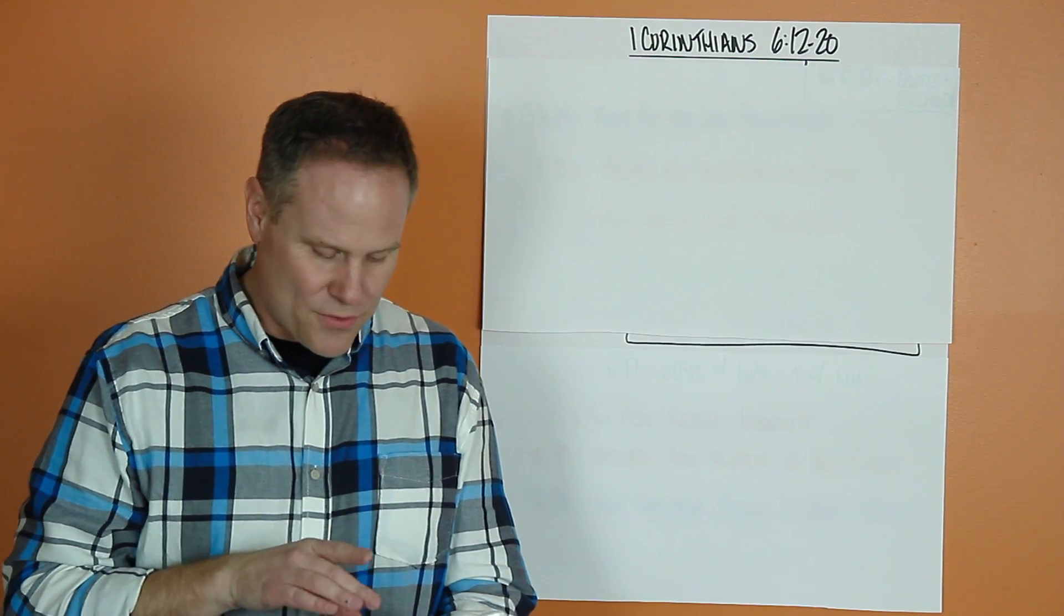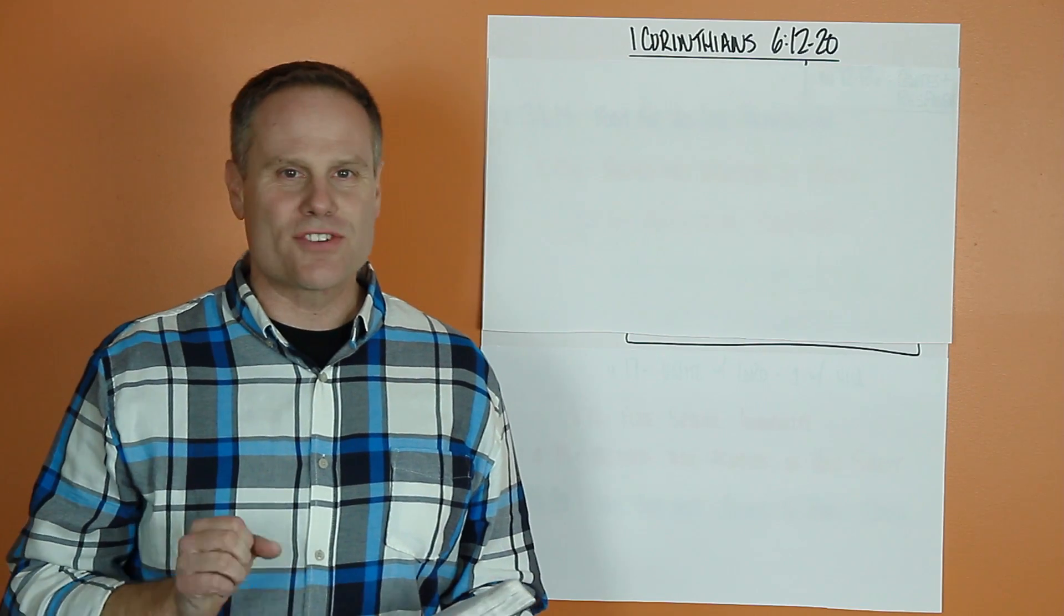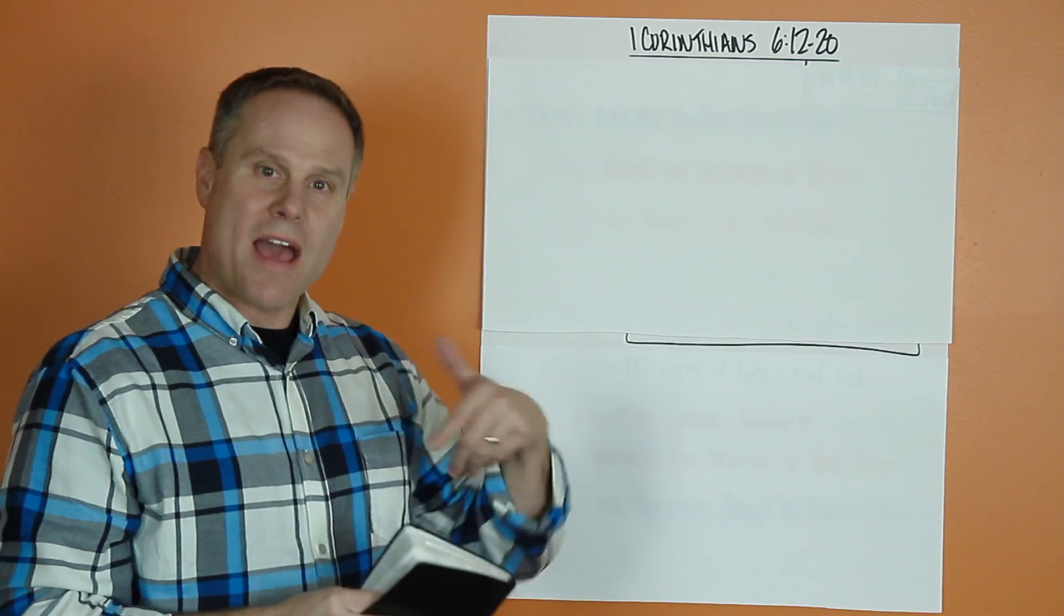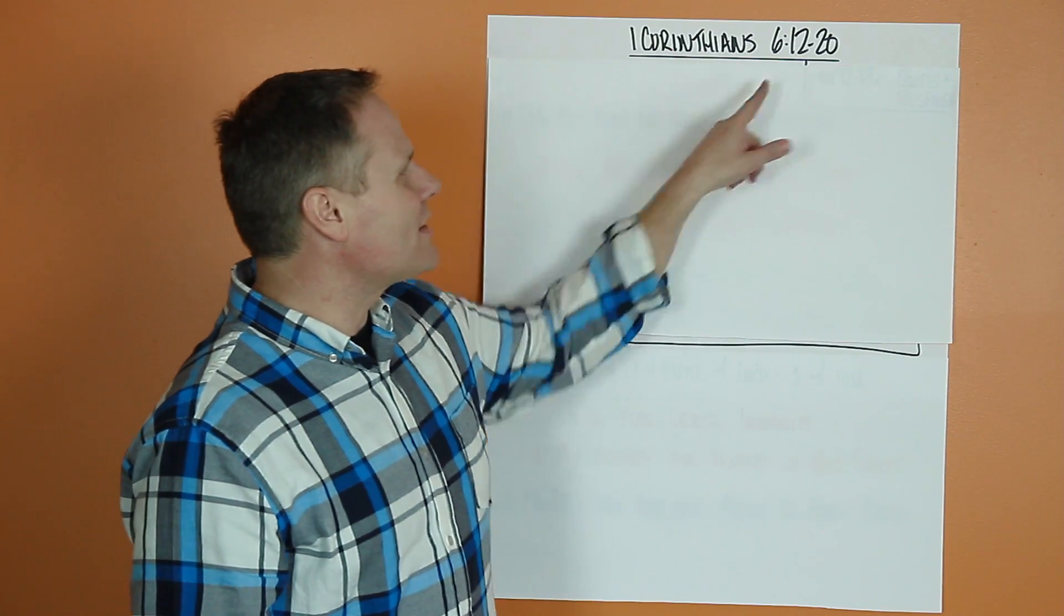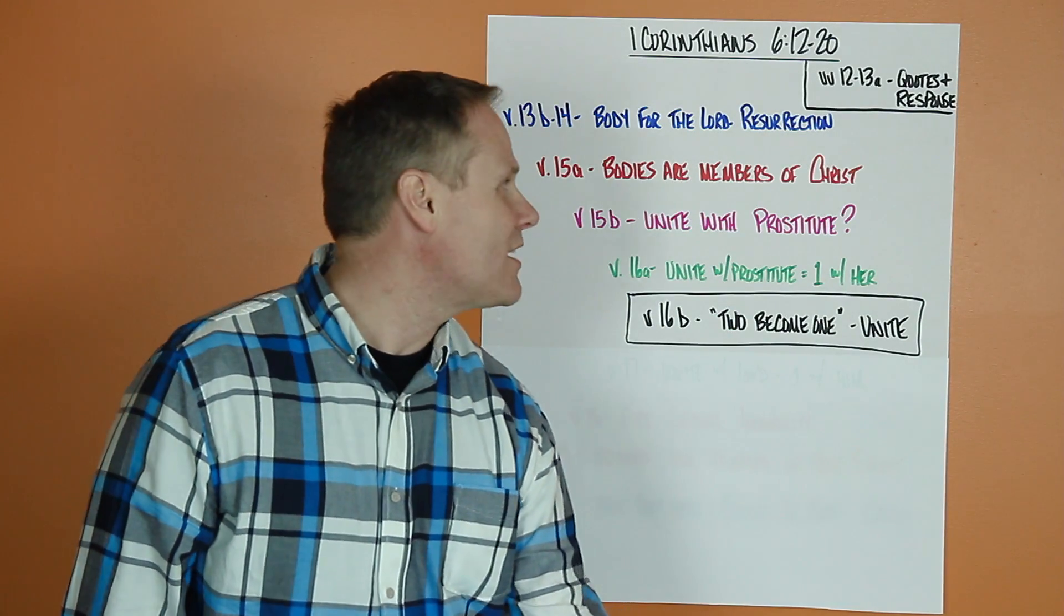When I look at chapter 6, 12 through 20, I think Paul is very intentional using a chiastic structure where he starts on one end and he moves toward a central point, then moves back out reflecting each piece as he goes. So I want to show it to you. This is 1 Corinthians 6, 12 through 20.